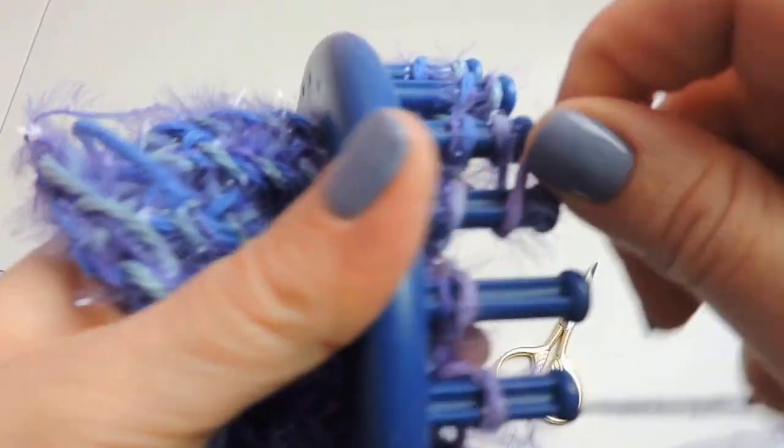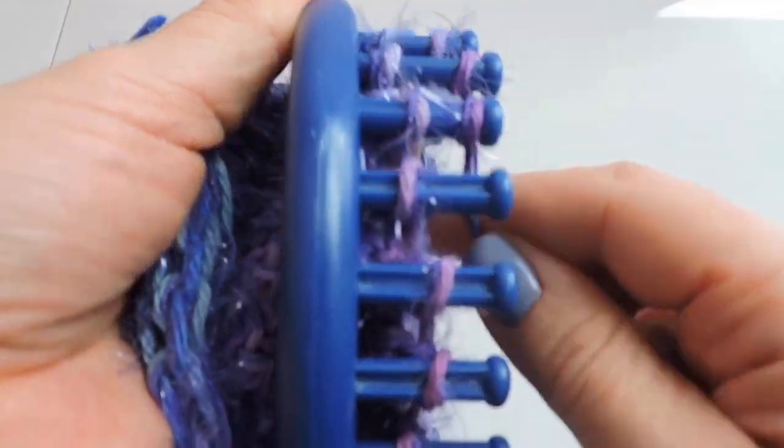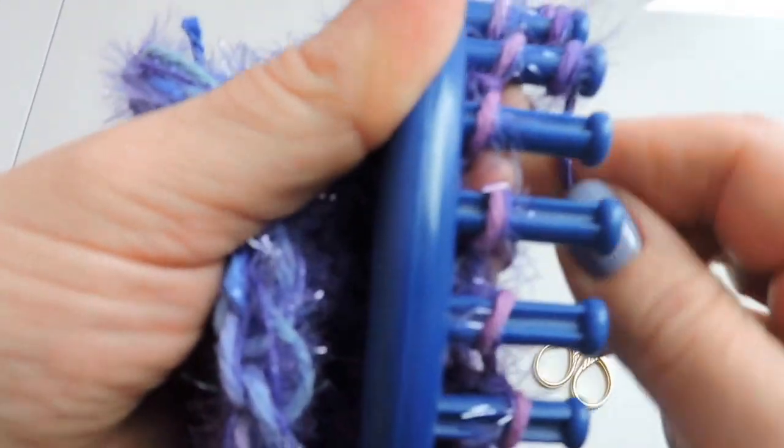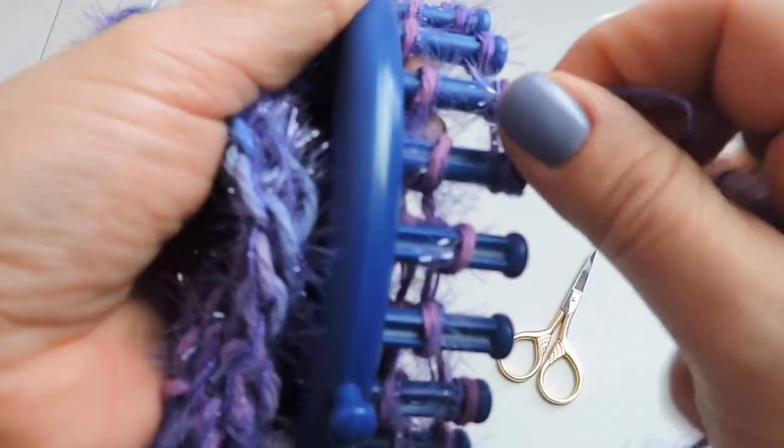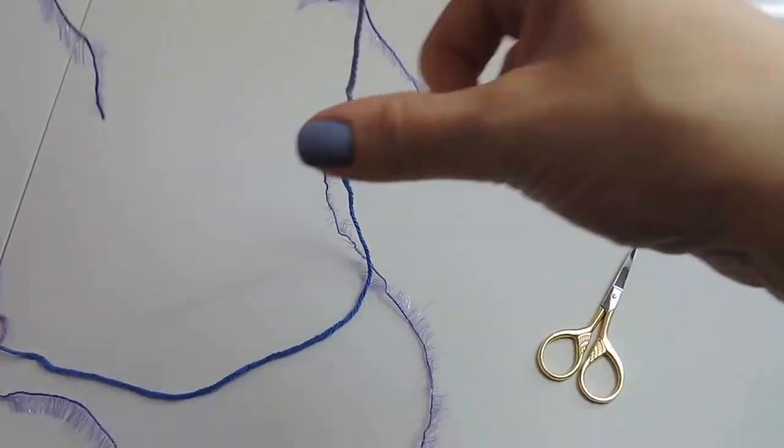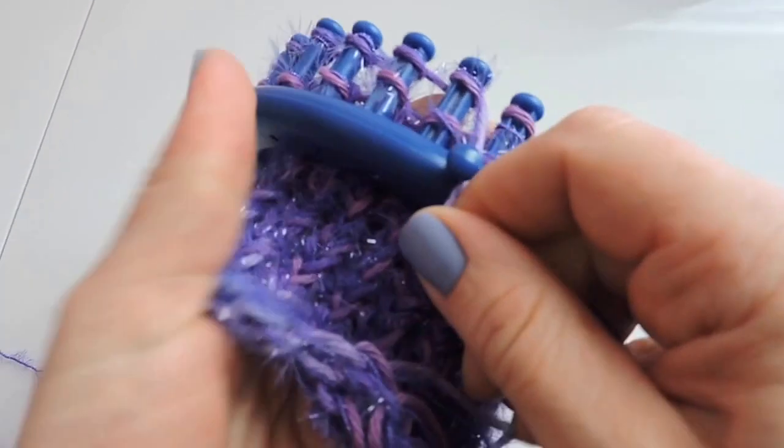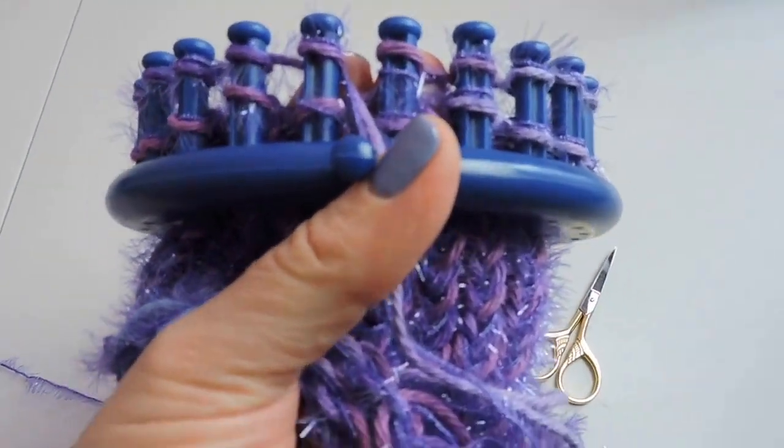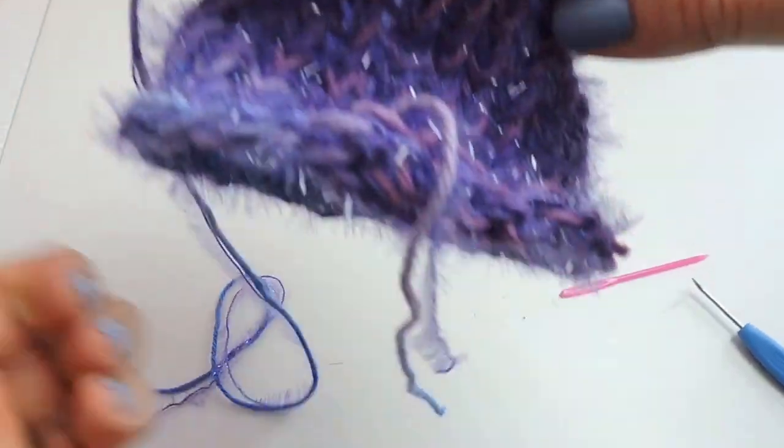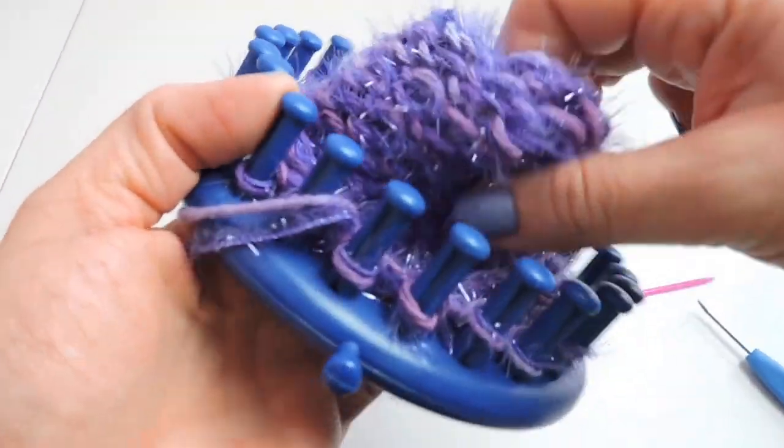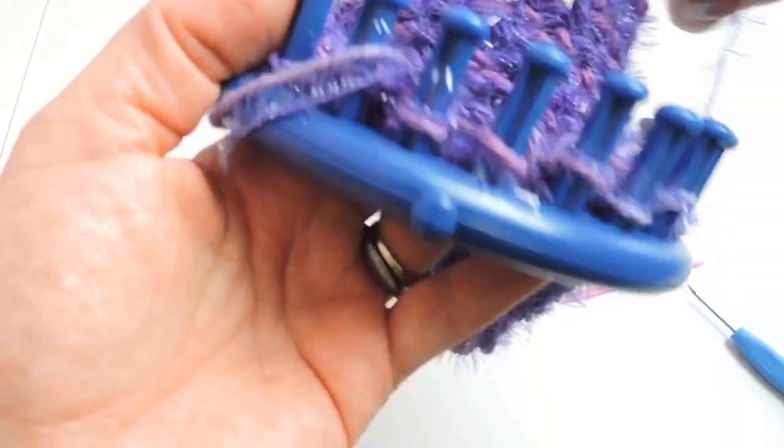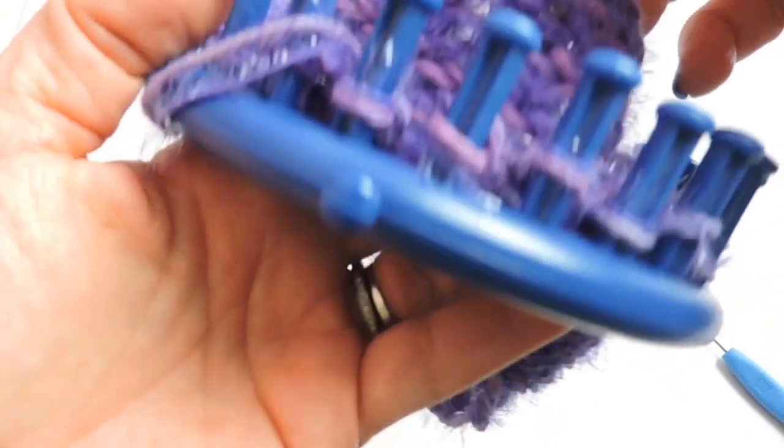So we're going to knit over this last row. Okay, I've knitted over my last row and this is how it's looking. So what I'm going to do is bring up the scrubby from the inside of the loom. And we're going to match the stitches similar to doing the brim of a hat.